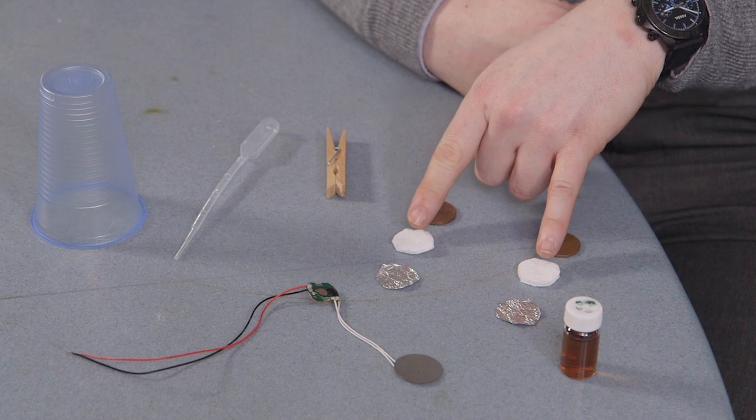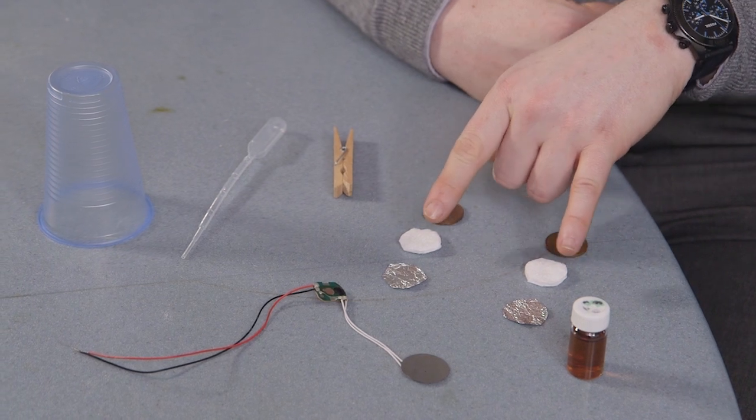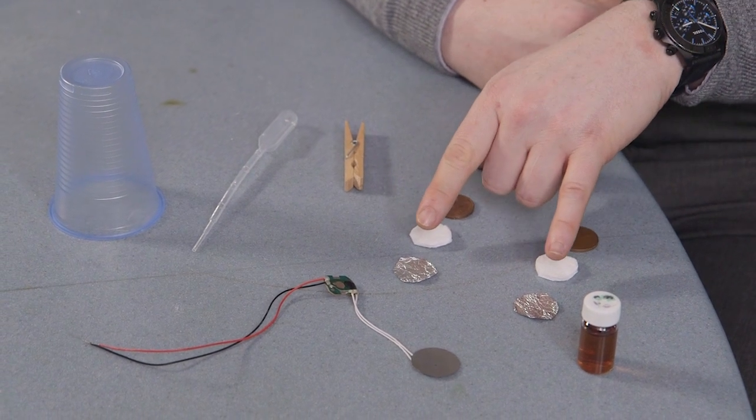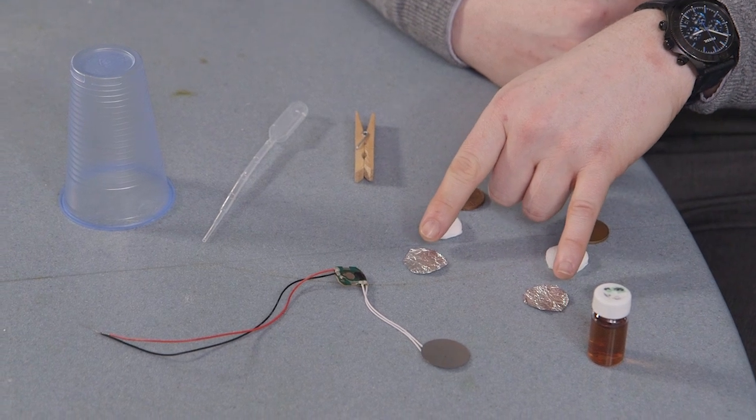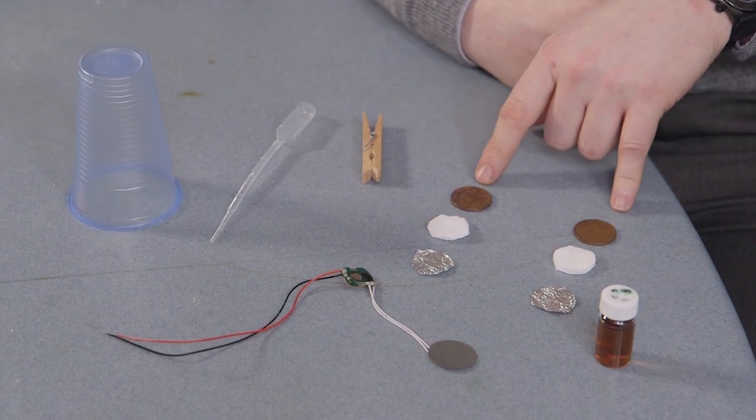Some cotton pads here, so these are just makeup pads. Some aluminium foil. Now these have all been cut to the same size as the 2p coins.